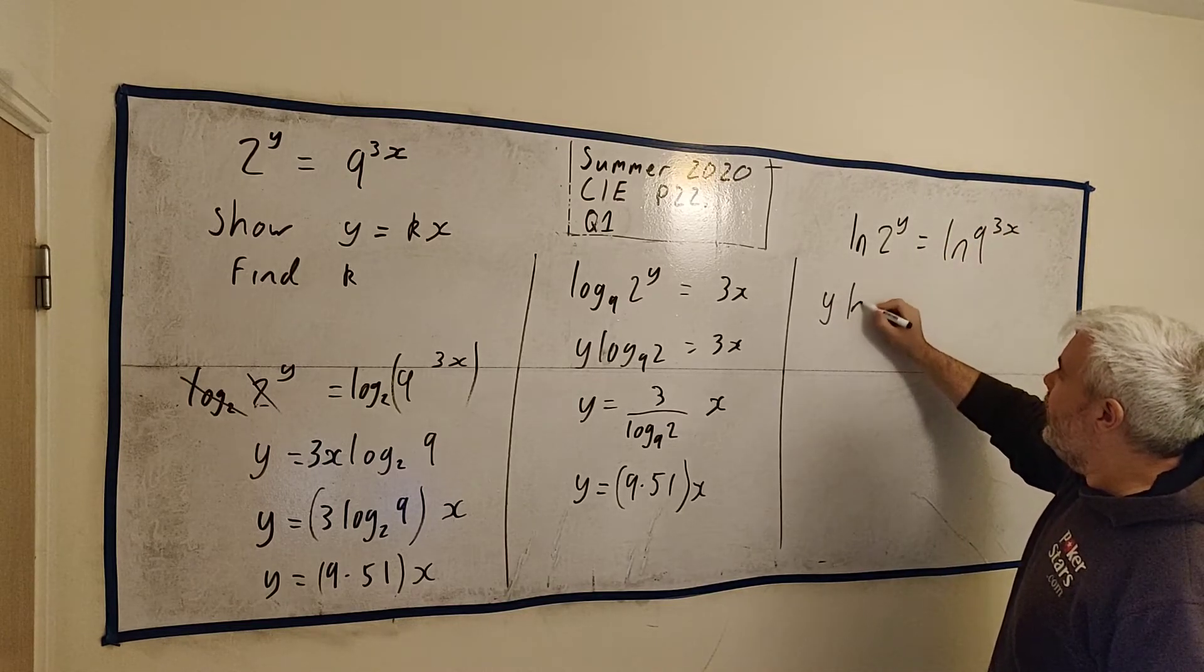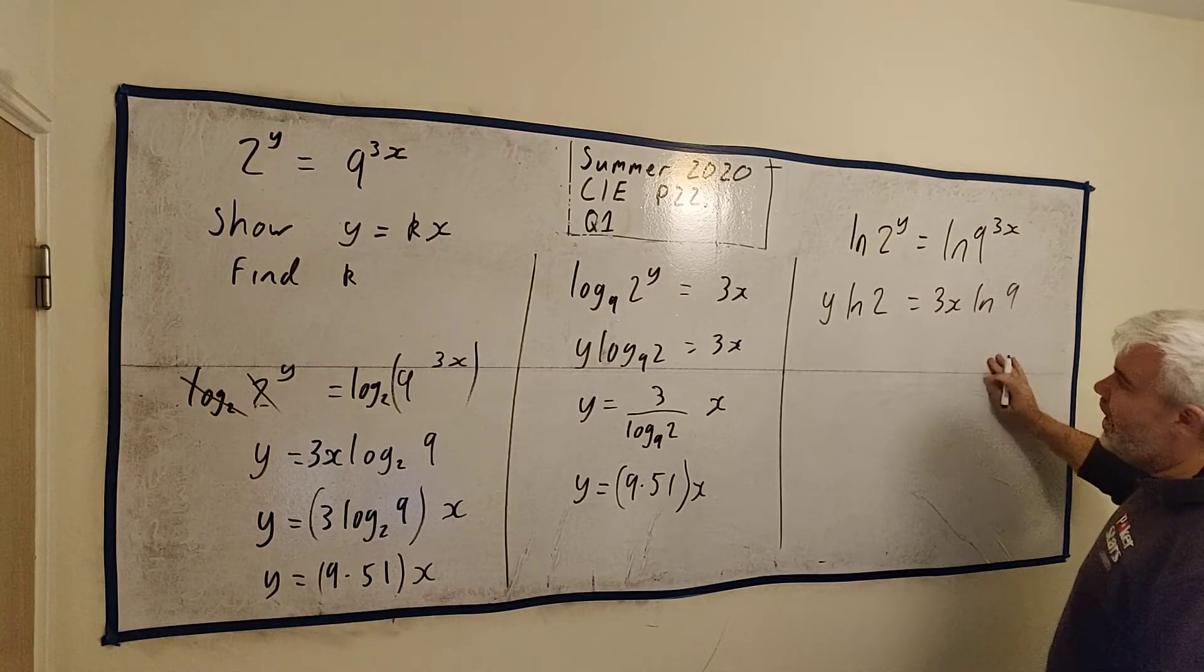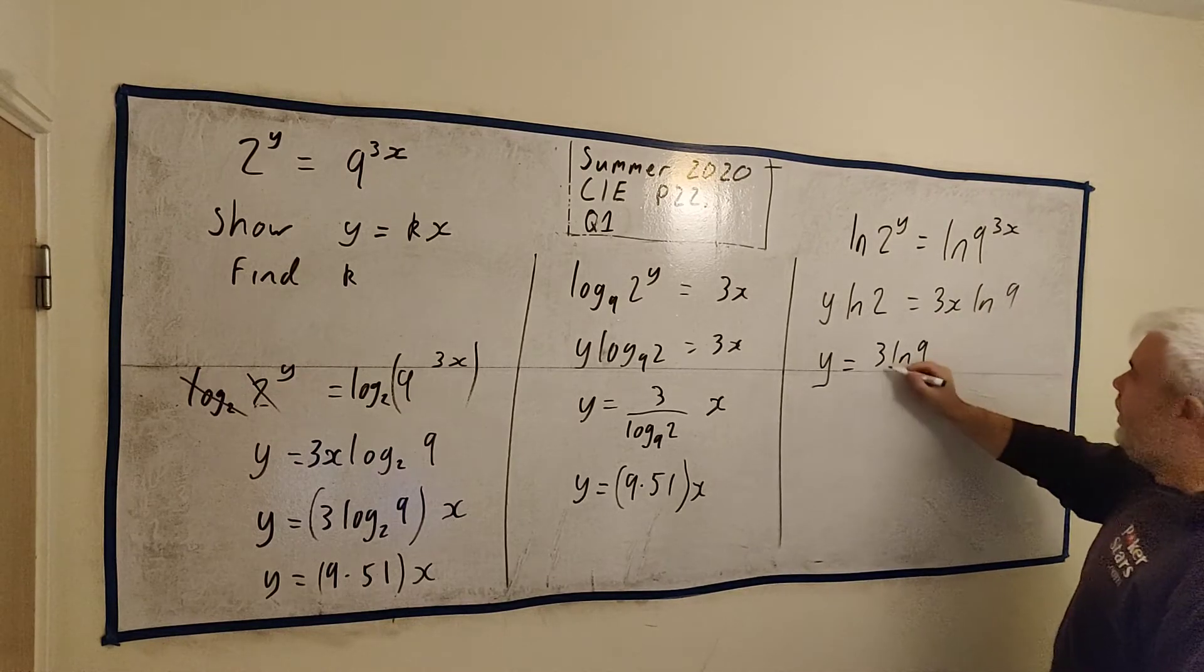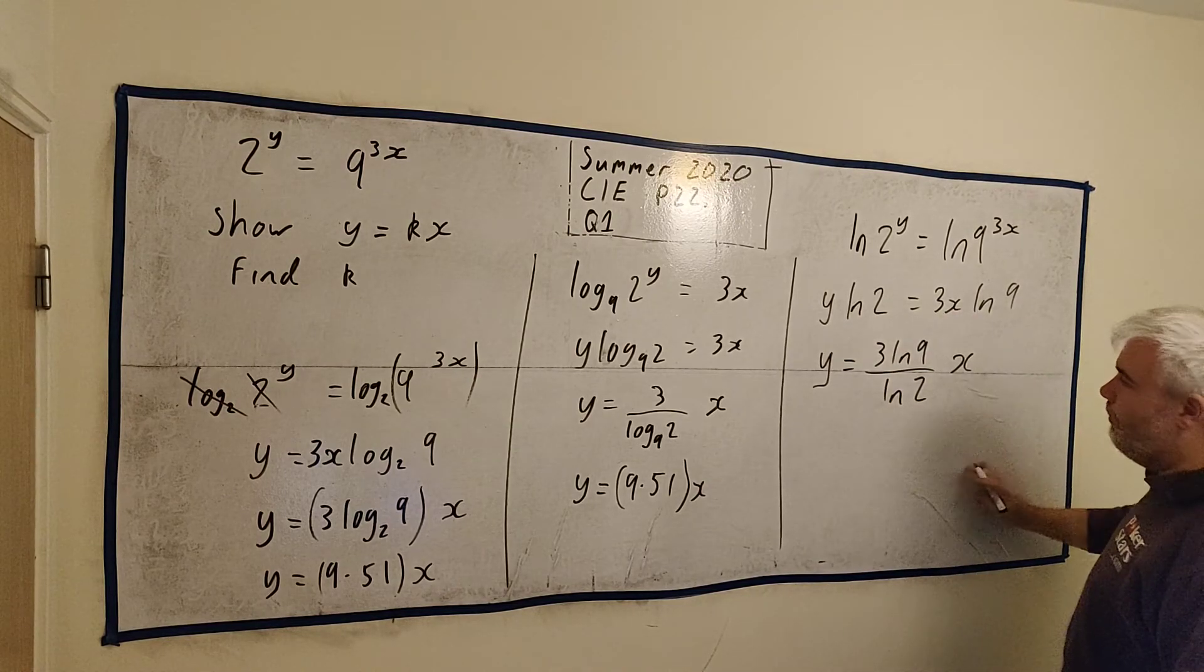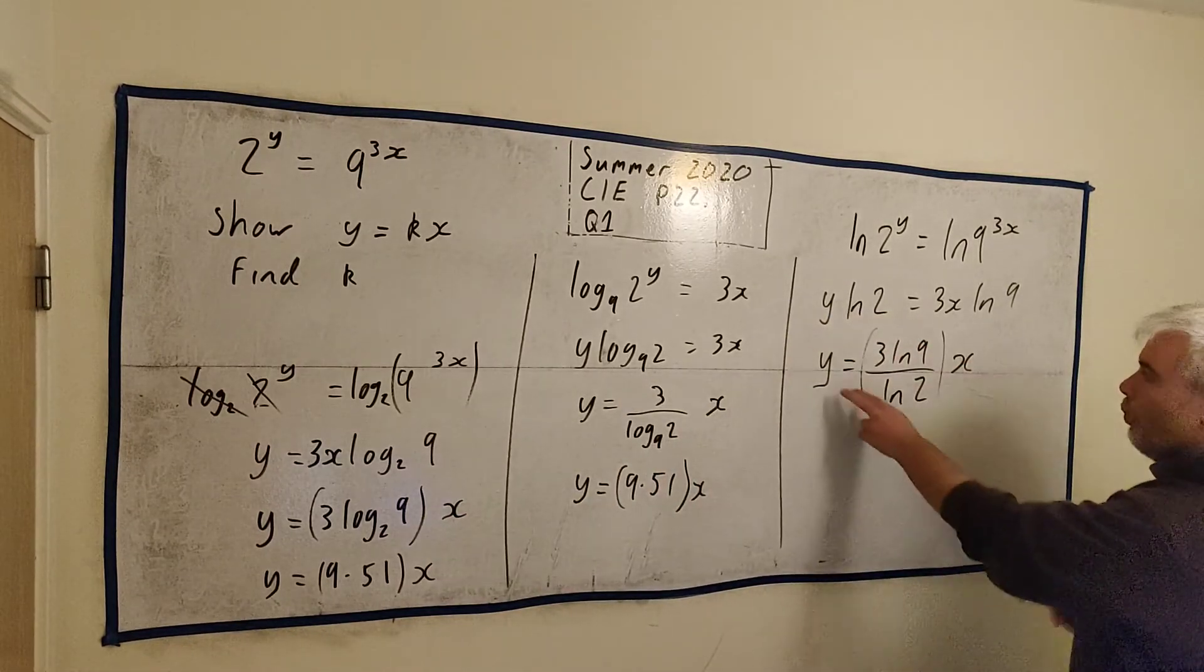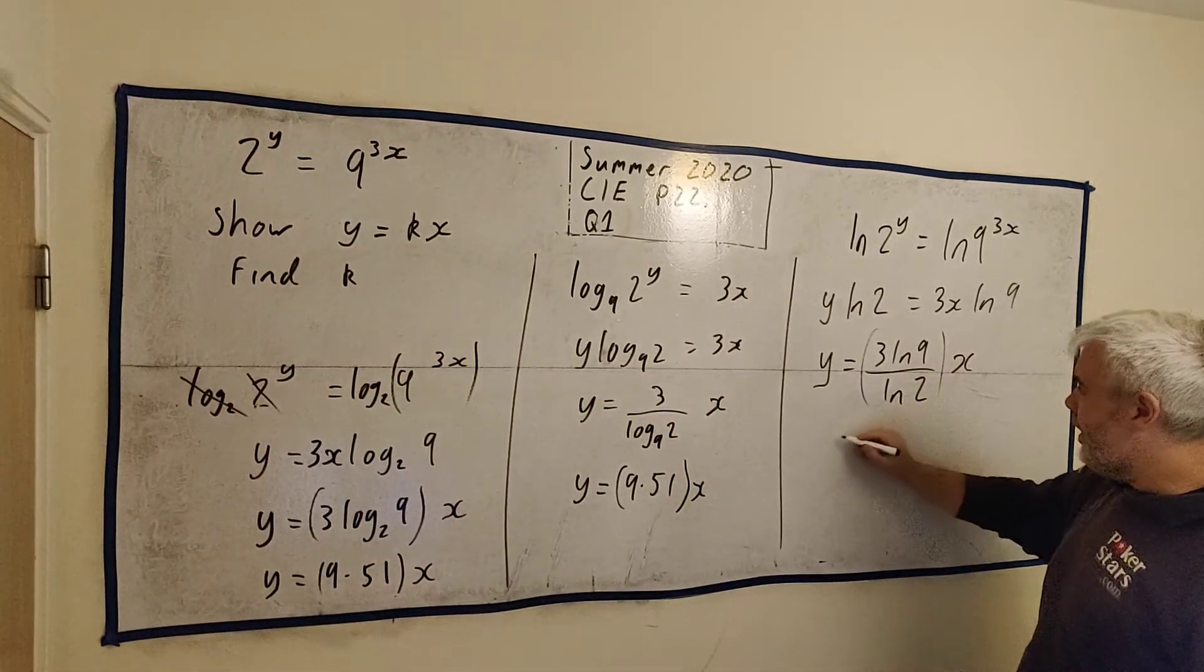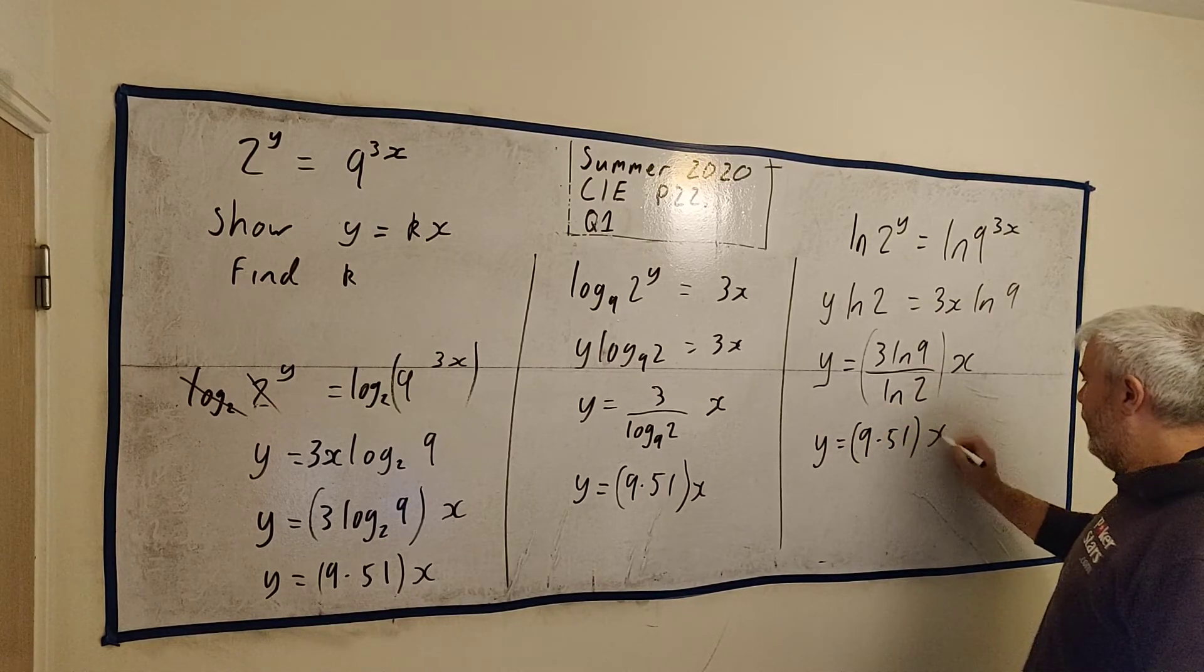And I just used the trick that the powers both came out front. So y times natural log of 2 is equal to 3x times natural log of 9. I rearranged it so I got y is equal to 3 times natural log of 9, 3 natural log of 9, divided by natural log of 2. And the x I'll write over here. And again this is still a perfectly good answer. It's y is equal to something times x. Just like they asked, y is equal to k times x. And this k in here is still equal to 9.51x.